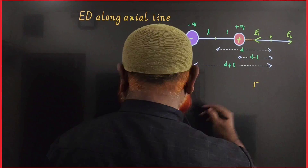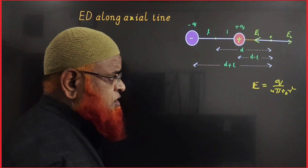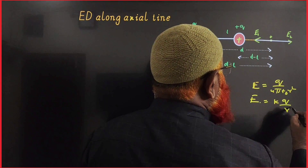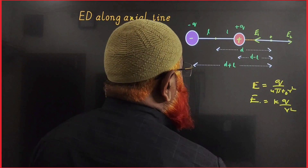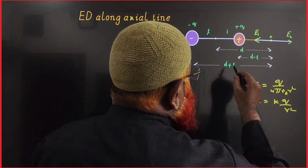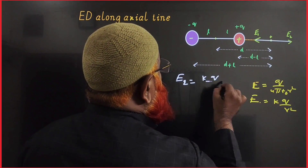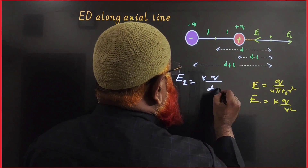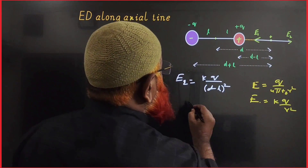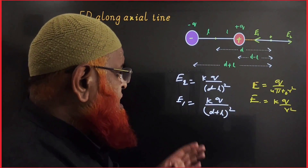The general formula for electric field intensity is E = Q divided by 4π ε₀ R². Taking 1/(4π ε₀) as K, the general formula is KQ/R². E2, due to the positive charge at distance (D − L), is KQ/(D − L)². E1, due to the negative charge at distance (D + L), is KQ/(D + L)².